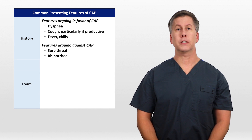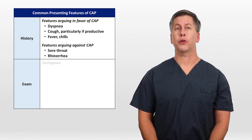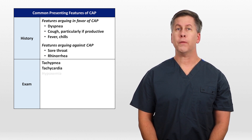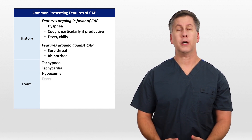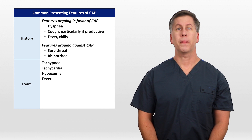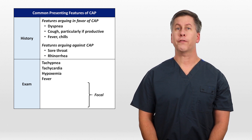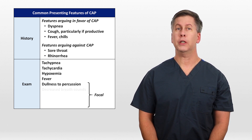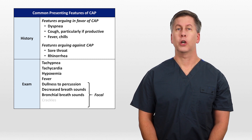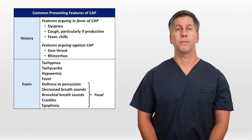Exam findings typically include tachypnea, tachycardia, hypoxemia, and fever. Focal lung findings include dullness to percussion, decreased breath sounds, bronchial breath sounds, crackles, and egophony.